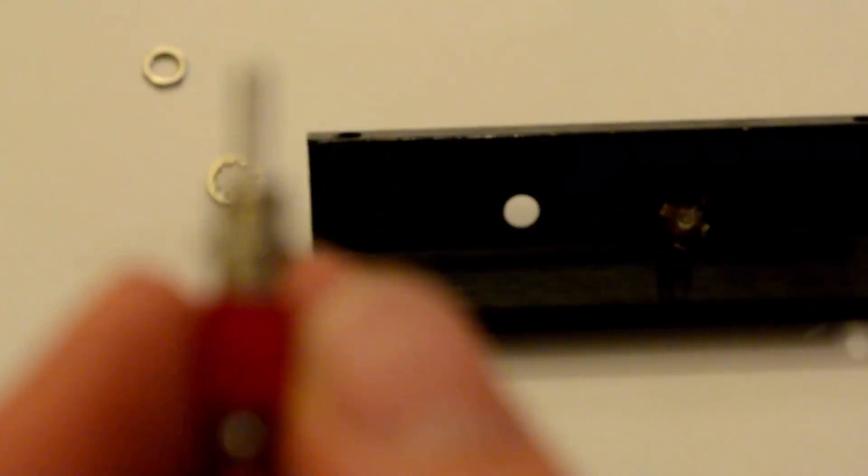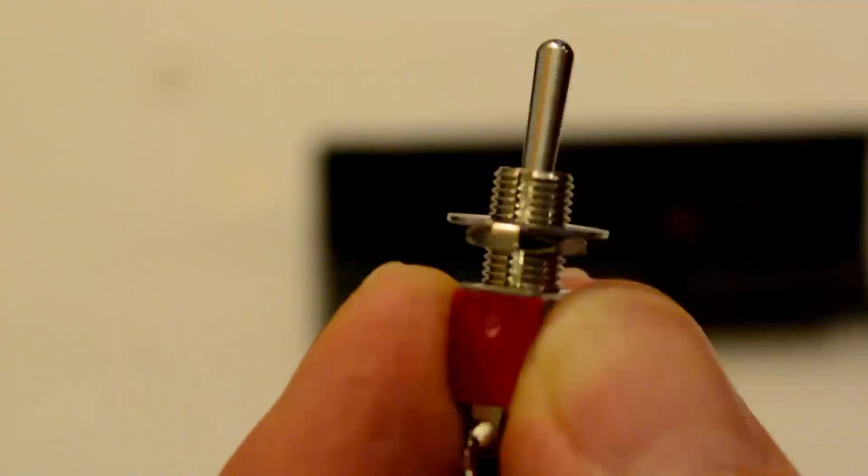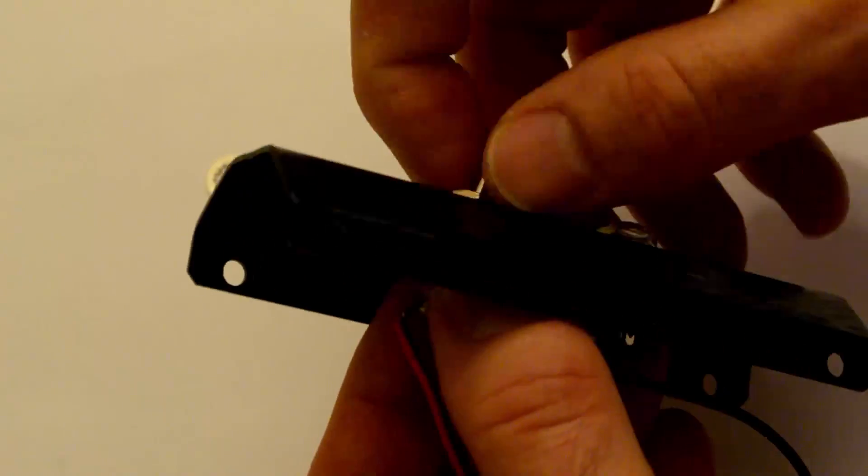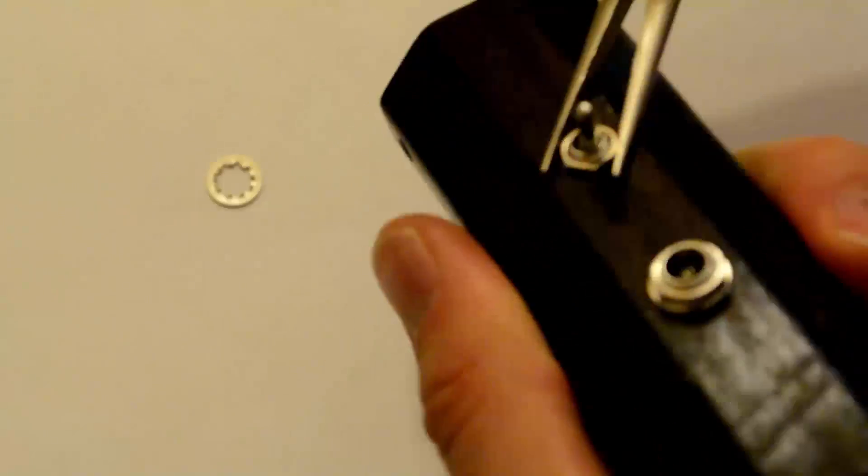Now you can go ahead and place the switch and the power jack into the front plate. The switch has a bevel down one of the sides where that no slip washer fits in. Now I put a piece of tape next to the switch to denote the on position, which is when the switch pole is pointing away from the connected outer lead.